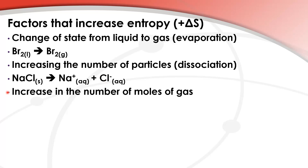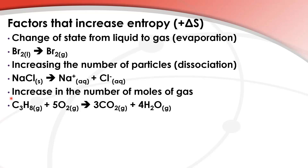Next we have an increase in the number of moles of gas. In this reaction we have propane reacting with oxygen to give carbon dioxide and water. On the left side of the arrow we have six moles of gas; on the right side we have seven moles of gas. That's an increase in entropy.